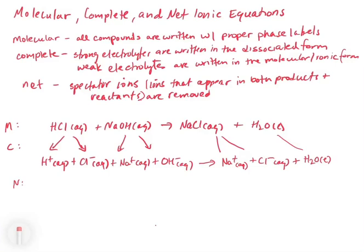So we have to go through and find in the complete which ions appear on both sides. H plus appears only on the left, so that doesn't get removed. Cl minus appears on both sides, so that will get removed, so we put a cross through that. Na plus also appears on both sides, so that's a spectator ion and it goes away. And so what we're left with is H plus aqueous plus OH minus aqueous gives H2O liquid.